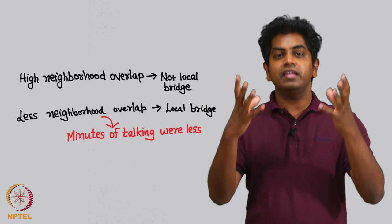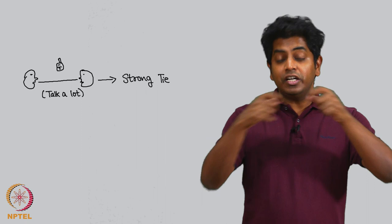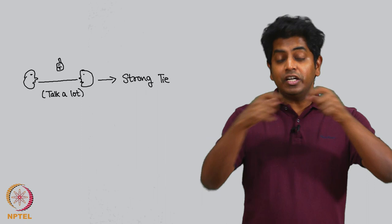What does this tell us? It tells us that local bridge is a very binary definition - is it a local bridge or not? The neighborhood overlap definition gives you nice grayscale values between 0 and 1. 0 means a local bridge, 1 means not a local bridge. And what happens in this data of cell phone usage? You observe that if two people are talking a whole lot, then they are strong tie. If they are talking very less, then they are weak tie.